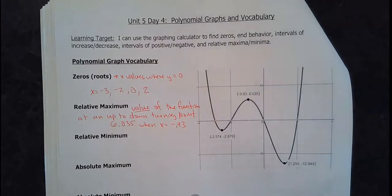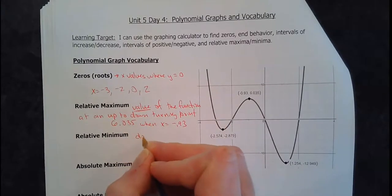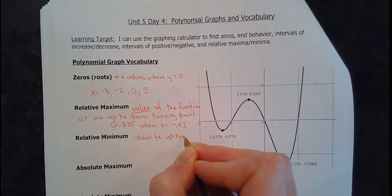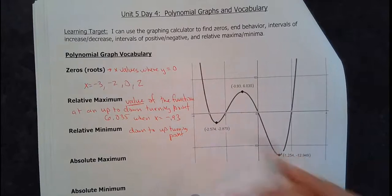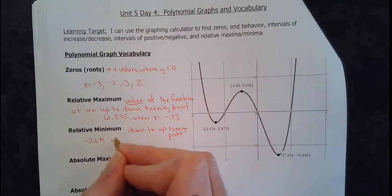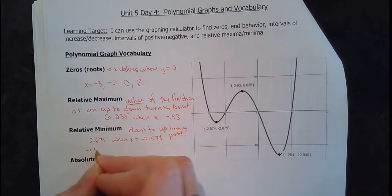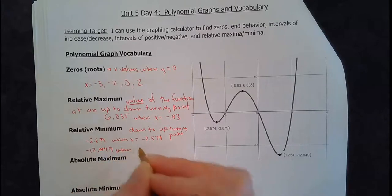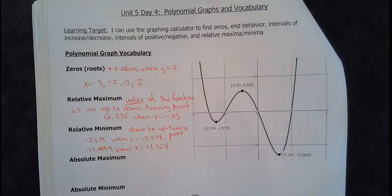If you're putting that on the calculator, there is a maximum value function on it — the calculator finds max. Now relative minimum is the same thing, but it's going to be a down-to-up turning point. On the graph, there are two relative minimums: one at negative 2.879 when x equals negative 2.574, and another at negative 12.949 when x equals 1.254. Relative is just when it turns.